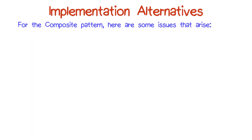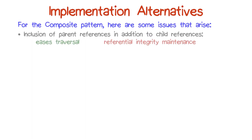For the composite pattern, here are some of the issues that arise. We know that in the pattern so far, we have references from parents to children. An issue or feature you might wish to include is: do you have pointers from children back to parents? Once you do this, of course, referential integrity problems might arise.